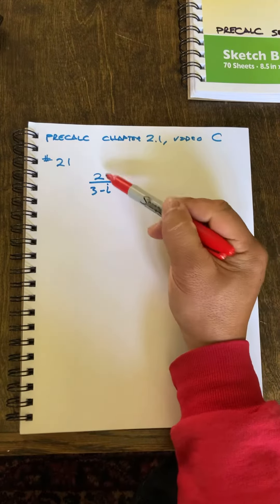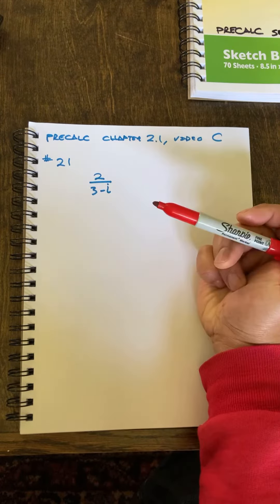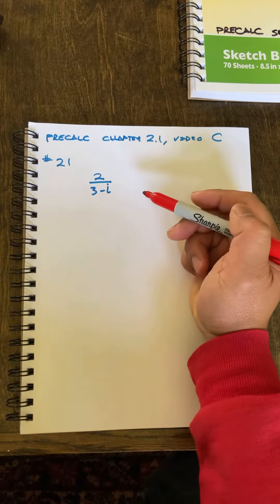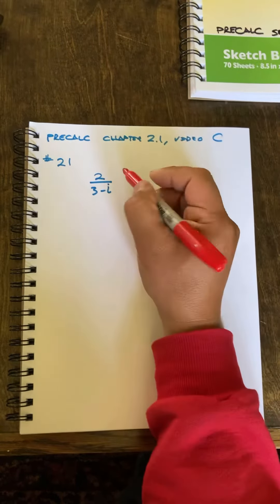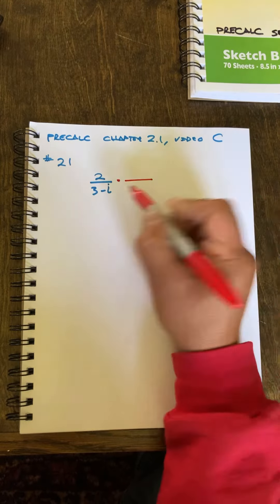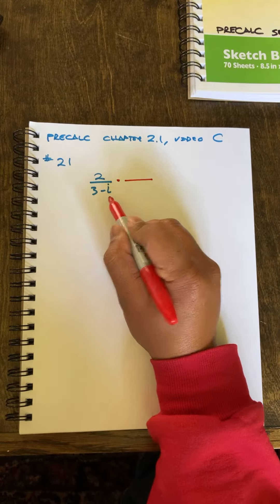I have 2 divided by this strange quantity, 3 minus i. And when you're dividing complex numbers, all you've got to do is multiply by the conjugate of this,